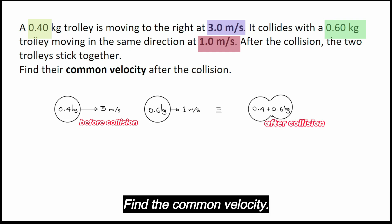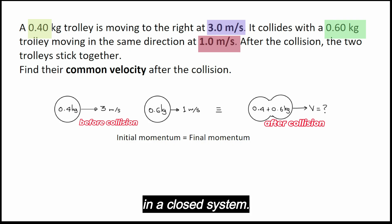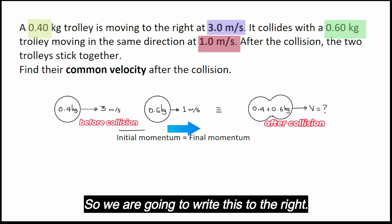Find the common velocity. Now we are going to use the law of conservation of momentum, which says the initial momentum is equal to final momentum if there are no resultant forces acting in that direction or in a closed system.